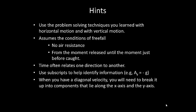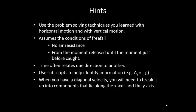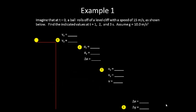When you have a diagonal velocity, you will need to break it up into its components that lie along the x-axis and the y-axis. When asked for velocity, you will need to reassemble the velocity components that lie along the x and y-axis, find the speed and the angle at which the velocity is at.